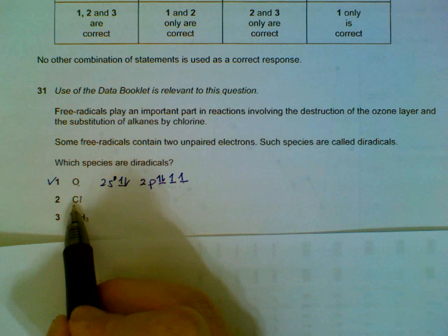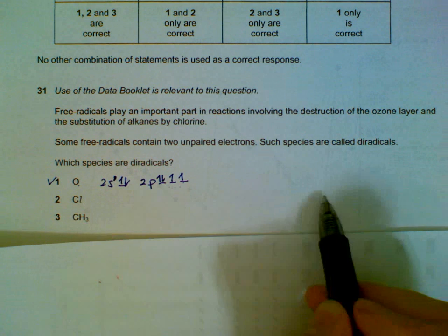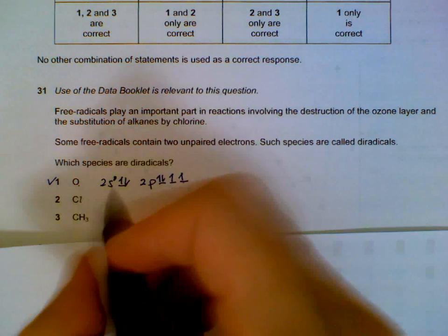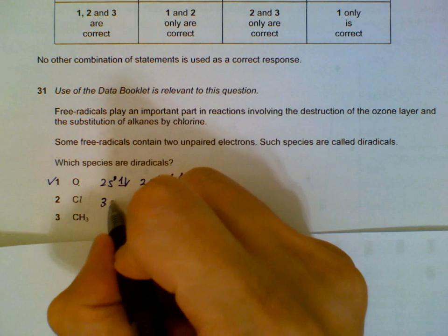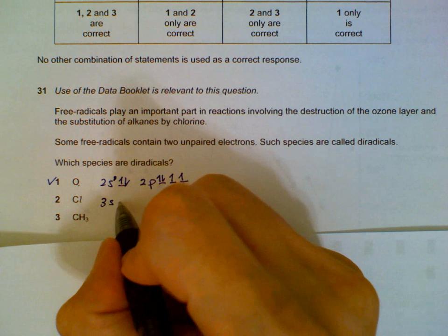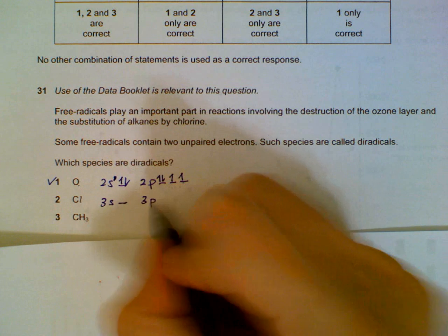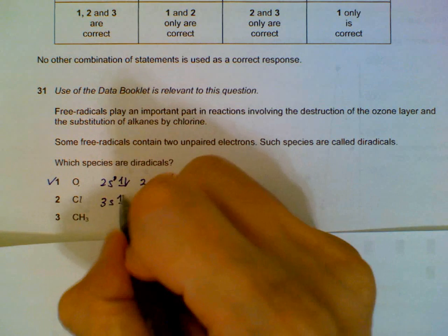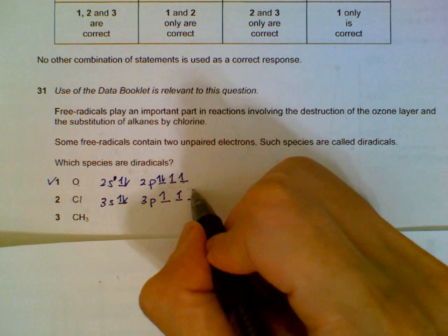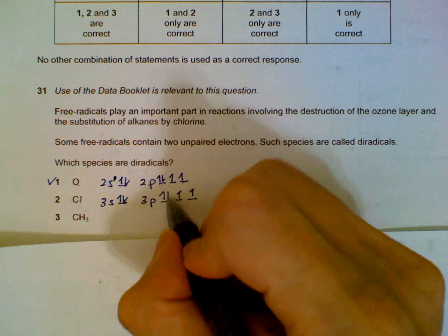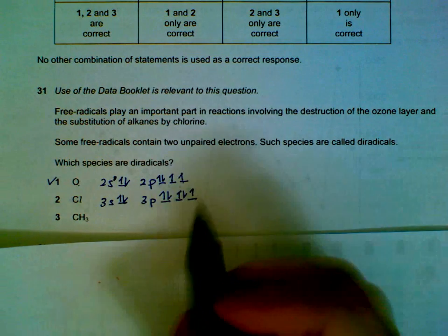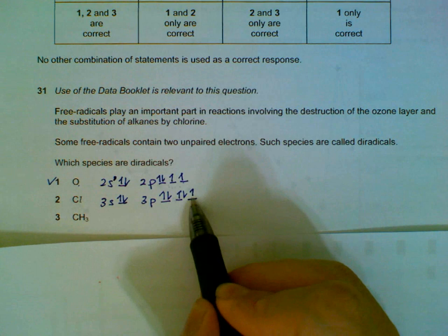For chlorine, it's about 17 electrons. You can draw all 17 or just focus on the outer electrons, which is seven. I'll do that - seven outer electrons. It has three shells, so I'll just focus on the third shell: 3s, 3p - one, two, three, four, five, six, seven. So it has only one unpaired electron, so it is not a diradical.